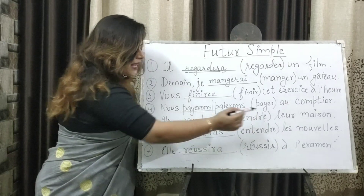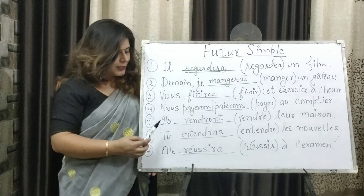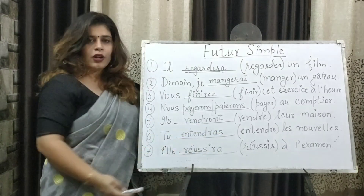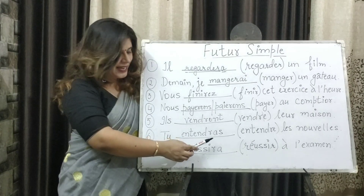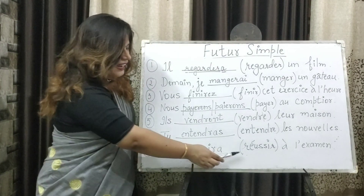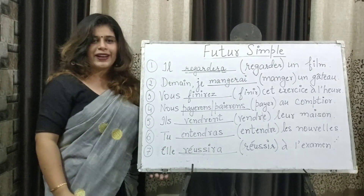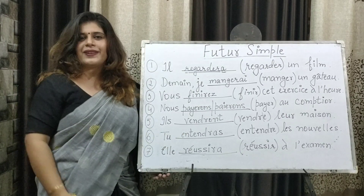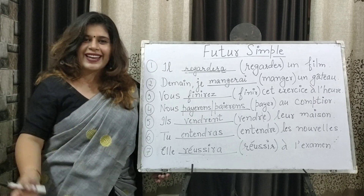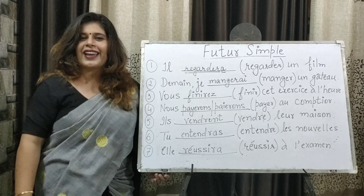Fifth: the verb is vendre, an RE verb — we drop the E to get vendr, then with ils we add ONT: ils vendront leur maison — they will sell their house. Next, also an RE verb: entendre — drop E to get entendr, add AS for tu: tu entendras les nouvelles — you will hear the news. Lastly, réussir is an IR verb — with elle we write the full infinitive and add A: elle réussira à l'examen — she will succeed at the exam. I hope you enjoyed the video — please like and subscribe to Learn French with Shifa. Merci, au revoir!